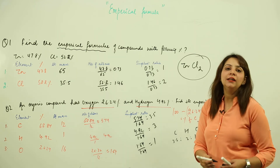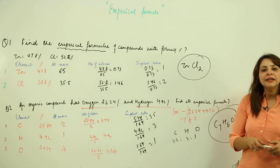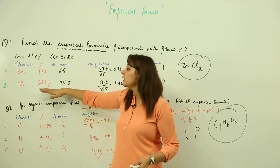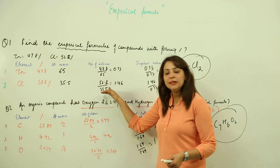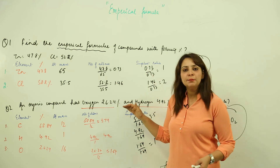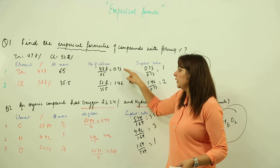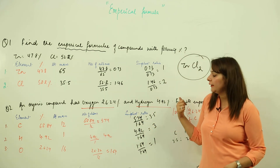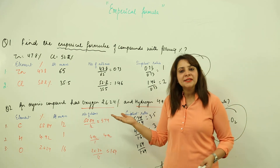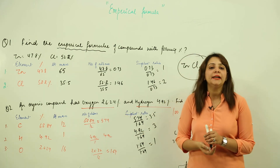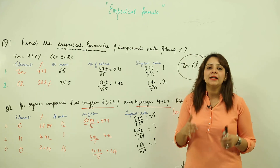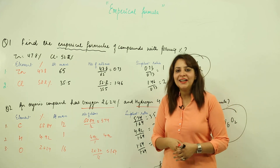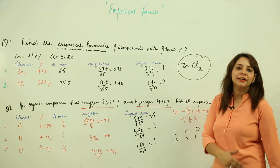To summarize: write the element name, their percentage abundance, atomic mass, divide percentage by atomic mass, then find the simplest ratio by dividing by the smallest value. Remember, organic compounds always contain carbon — sometimes the question won't give you its percentage, so keep that in mind to avoid being tricked.